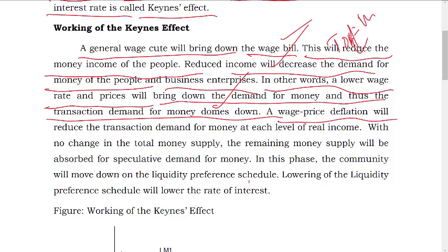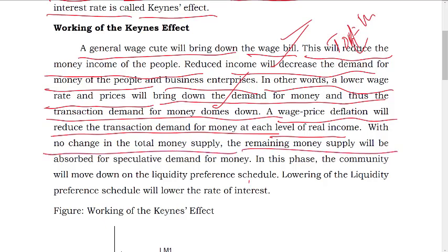As wage-price deflation reduces the transaction demand for money at each level of income, with no change in the total money supply, the remaining money supply will be absorbed into speculative demand for money.